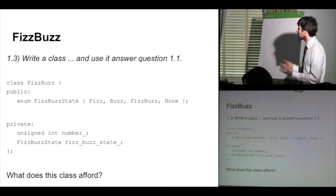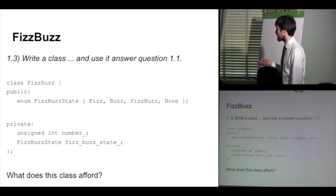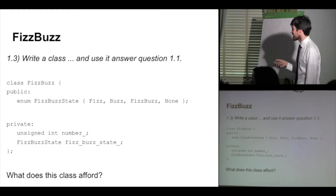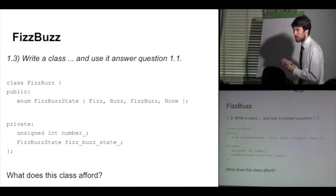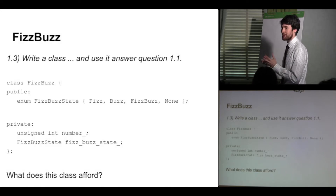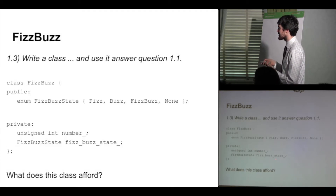Many people made getters and setters so they could set the number, get the number, set the state, and get the state. But this is not really the right thing to do. If you're just going to have getters and setters you can make the member variables public — so why wouldn't you want them public? The issue is: what would be some way to break the abstraction? If you can set the number and then set the state to be different from what the number implies — like setting the number to 8 but then setting the FizzBuzz state to FizzBuzz, meaning divisible by both three and five — it's going to return FizzBuzz even though 8 is not divisible by either.